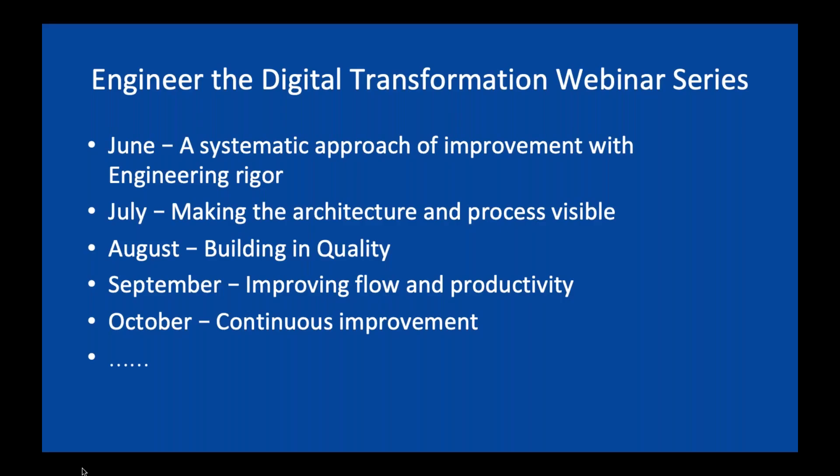We started in June with an overview of how to drive improvement with engineering rigor. In July, we laid out that depending on the application, the architecture, and whether you own the deployment process or not, that really defines how you go after improving the process and removing waste and inefficiency. You need to understand the problem you're trying to solve, and we start that by making the architecture and the process visible and then mapping it out.